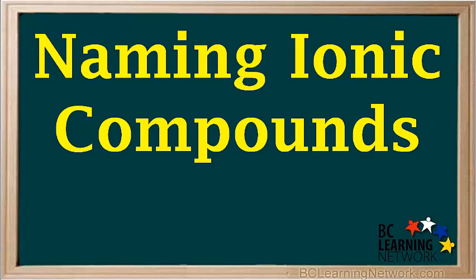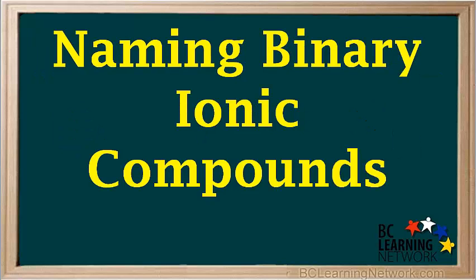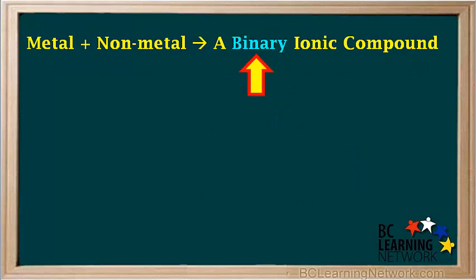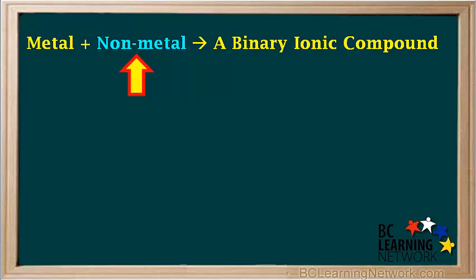In this video, we'll go over the rules for naming ionic compounds, and we'll show you some examples. We'll start with binary ionic compounds. Binary means these compounds are made up of only two elements, a metal and a non-metal.